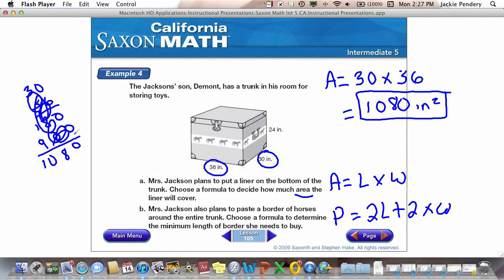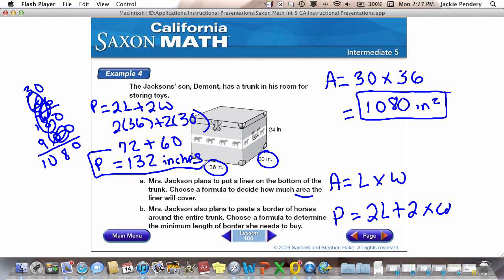And then the perimeter. Perimeter equals 2 times the length plus 2 times the width. 2 times 36 plus 2 times 30. 2 times 36 is 72 plus 2 times 30, which is 60. And we have 132 inches equals my perimeter. So, there we just took the information. We found the area. We found the perimeter. Make sure that you write down the formula you choose first, and then plug in your numbers.